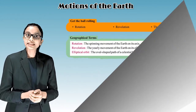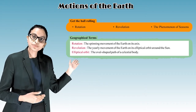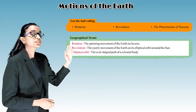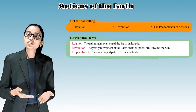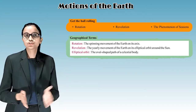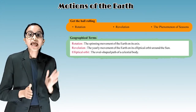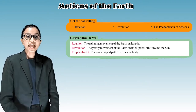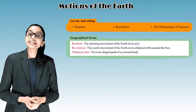Let's get the ball rolling with rotation, revolution, and the phenomena of seasons. The geographical terms are: Rotation — the spinning movement of the earth on its axis. Revolution — the yearly movement of the earth on its elliptical orbit around the sun. Elliptical orbit — the oval-shaped path of a celestial body.